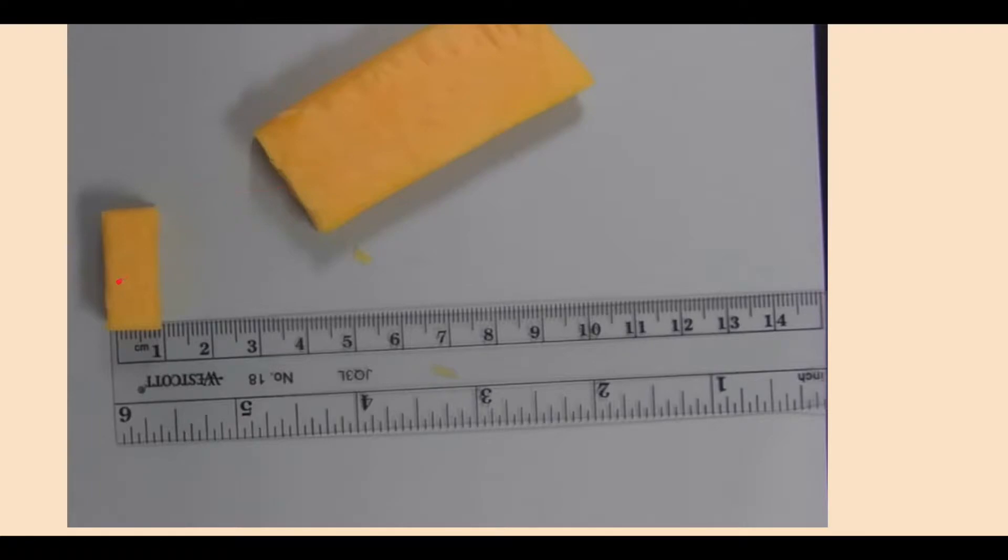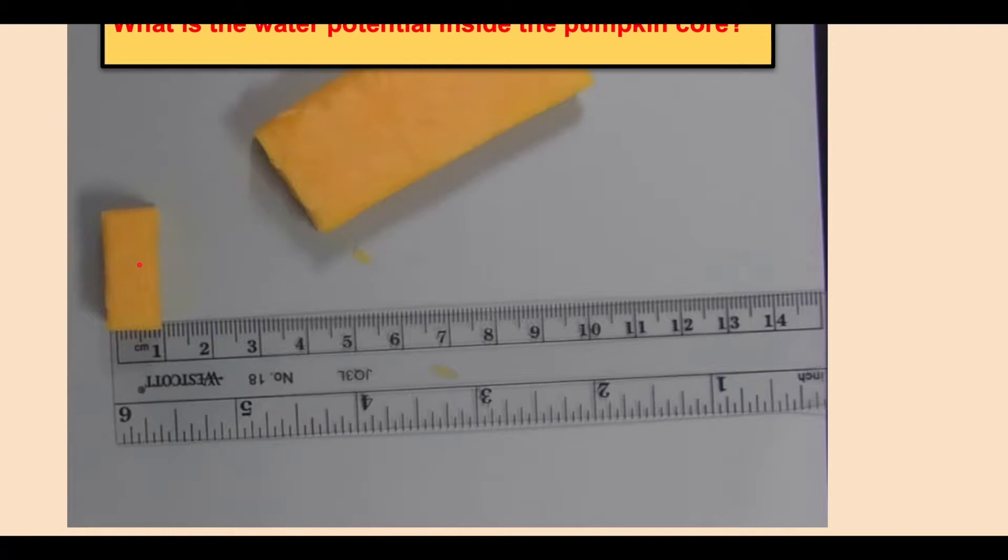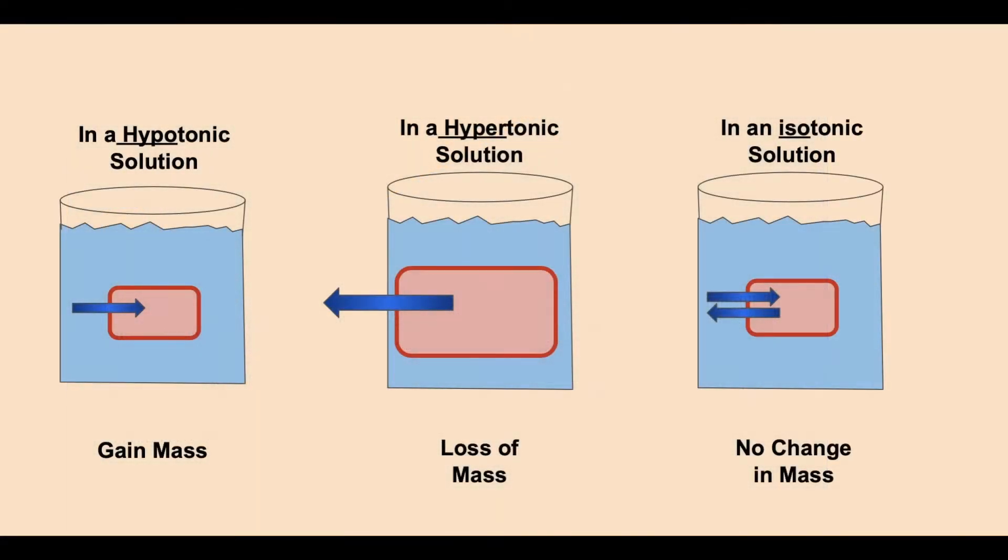This osmosis lab traditionally is done in AP Bio with potato. We are using pumpkin, of course, for the Halloween spirit. We cut one centimeter cube pieces, keeping them about the same size. These pieces are going to be considered the pumpkin core, and we're going to do an experiment to find out what is the water potential inside the pumpkin core.